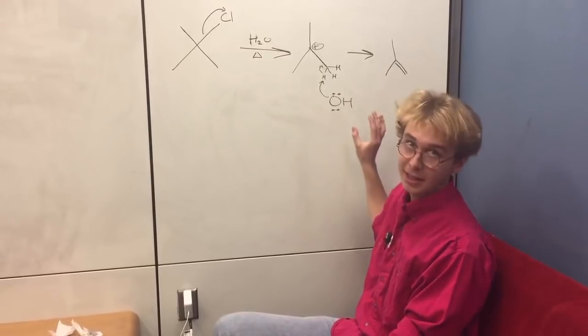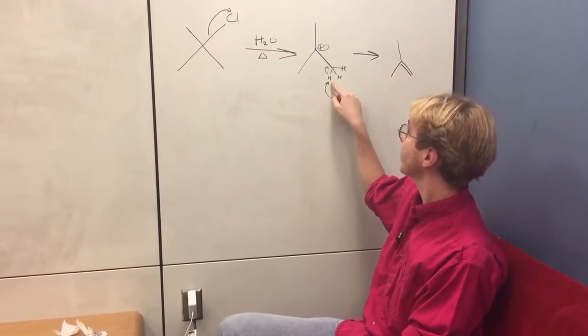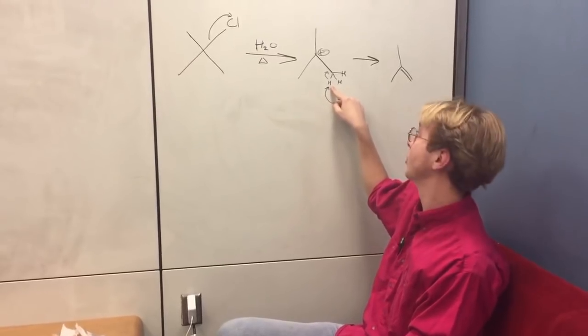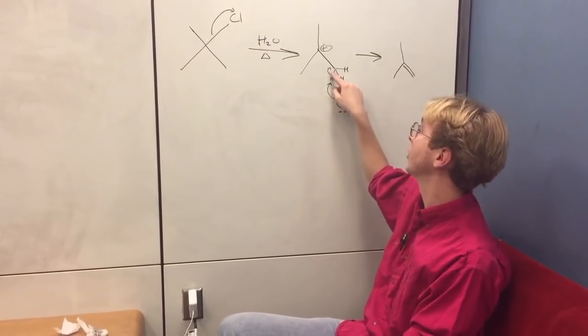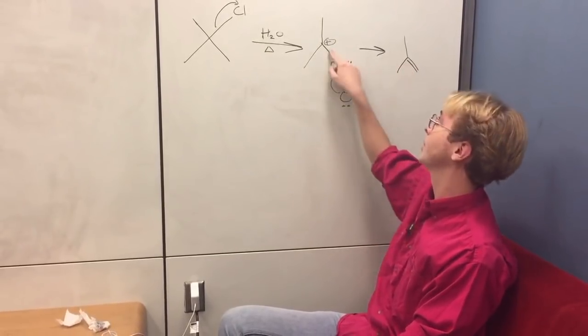And what happens next is the base, in this case water, attacks a hydrogen to get a proton transfer, and the remaining electron forms a pi bond here, a double bond, to stabilize this out.